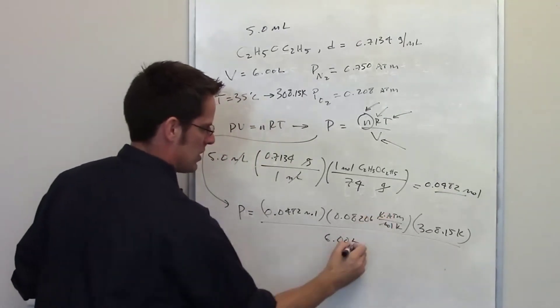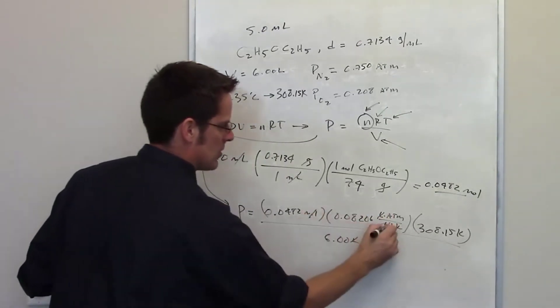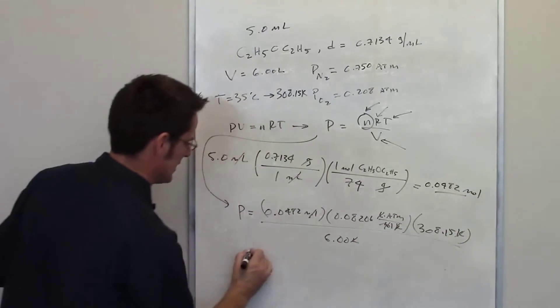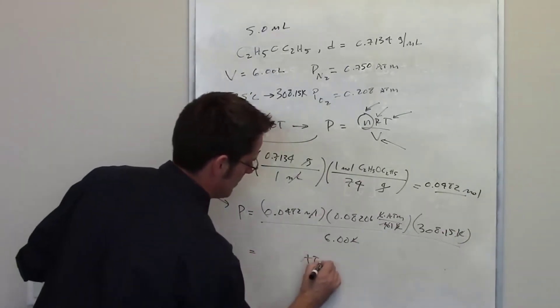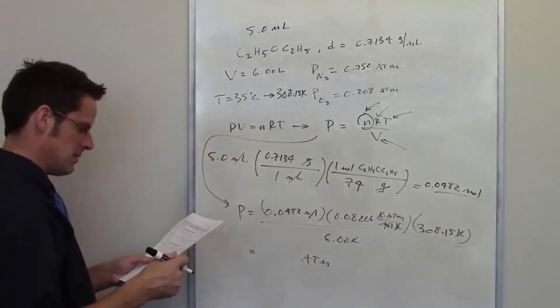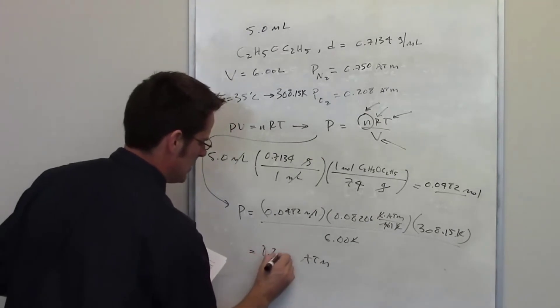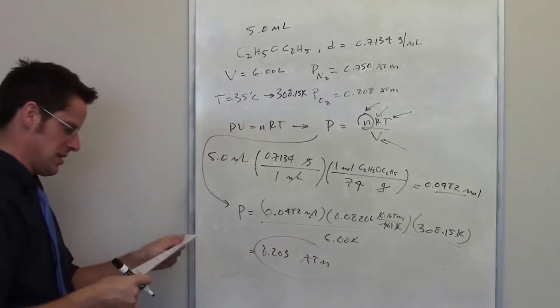The liters cancel each other out, the moles cancel each other out, the kelvins cancel each other out. I'm left with the units of atmosphere which is what I'm looking for. When I throw that into my calculator I end up getting 0.203 total atmospheres for diethyl ether.